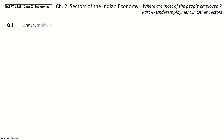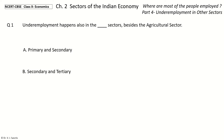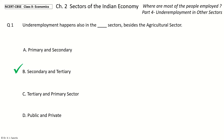Question 1: Underemployment happens also in which sectors besides the Agricultural sector? The options are: Primary and Secondary; Secondary and Tertiary; Tertiary and Primary Sector; Public and Private. The answer is Secondary and Tertiary.